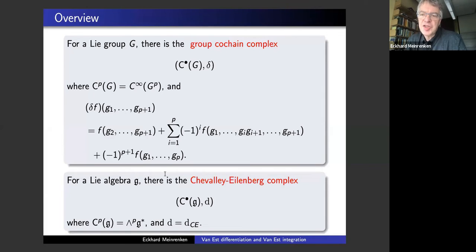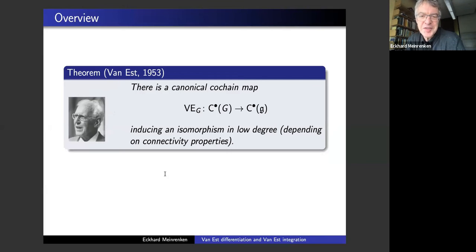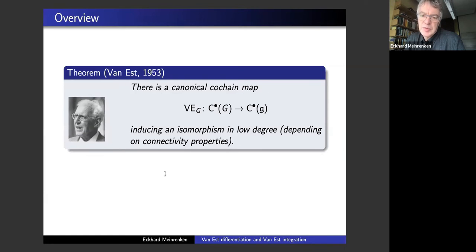We'd like to understand the relationship between this group complex and Lie algebra complex. In some way the Lie algebra complex should be the infinitesimal version of the group complex, but how can you make this precise? This was made precise by Van Est in 1953. He constructed an explicit cochain map from Lie group cochains to Lie algebra cochains — some kind of differentiation map — and proved that in cohomology it induces an isomorphism in low degrees, depending on the connectivity of G. If G is N-connected, then up to degree N it's an isomorphism.